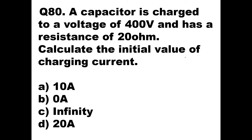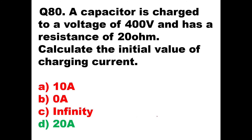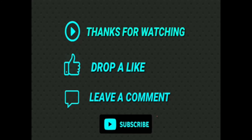Question number 80: A capacitor is charged to a voltage of 400 volts and has a resistance of 20 ohms. Calculate the initial value of the charging current. Using Ohm's law, I = V / R = 400 / 20 = 20 amperes. Option D is the right answer: I = 20 amperes. In total, I have covered 20 questions based on Coulomb's law and charging and discharging of capacitors. On the next topic, I will take another 20 questions in my next video. Thank you very much.